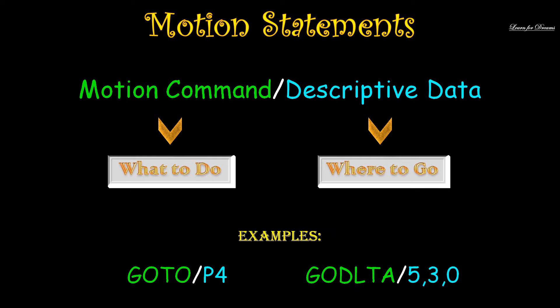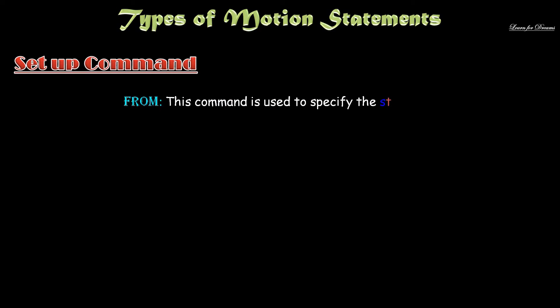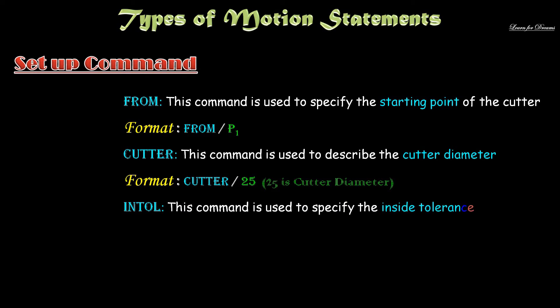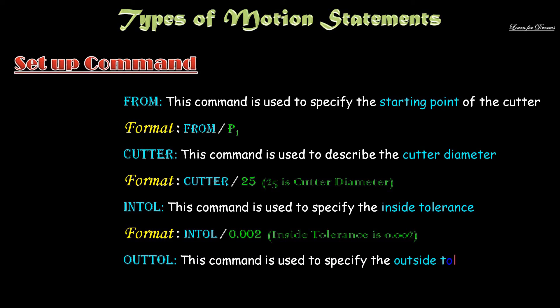Now let's see types of motion statements. First one is setup commands. FROM - this command is used to specify the starting point of the cutter. Format is FROM slash P1, where P1 is point. Then CUTTER - this command is used to describe the cutter diameter. Format is CUTTER slash 25. Then for inside tolerance INTOL slash 0.00002 and outside tolerance OUTTOL slash 0.005.